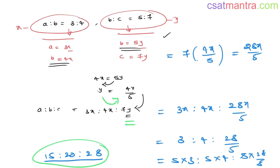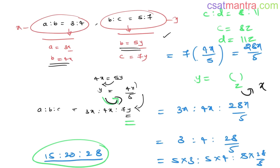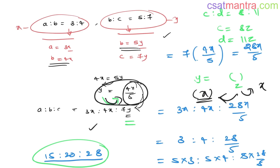There is a shortcut way also, which we'll cover in solved examples. If you also have a ratio C is to D as 8 is to 11, you can write C as 8z and D as 11z. Then write y in terms of z and z in terms of x — since you already have y in terms of x, you can get z in terms of x as well, and x will cancel out everywhere.